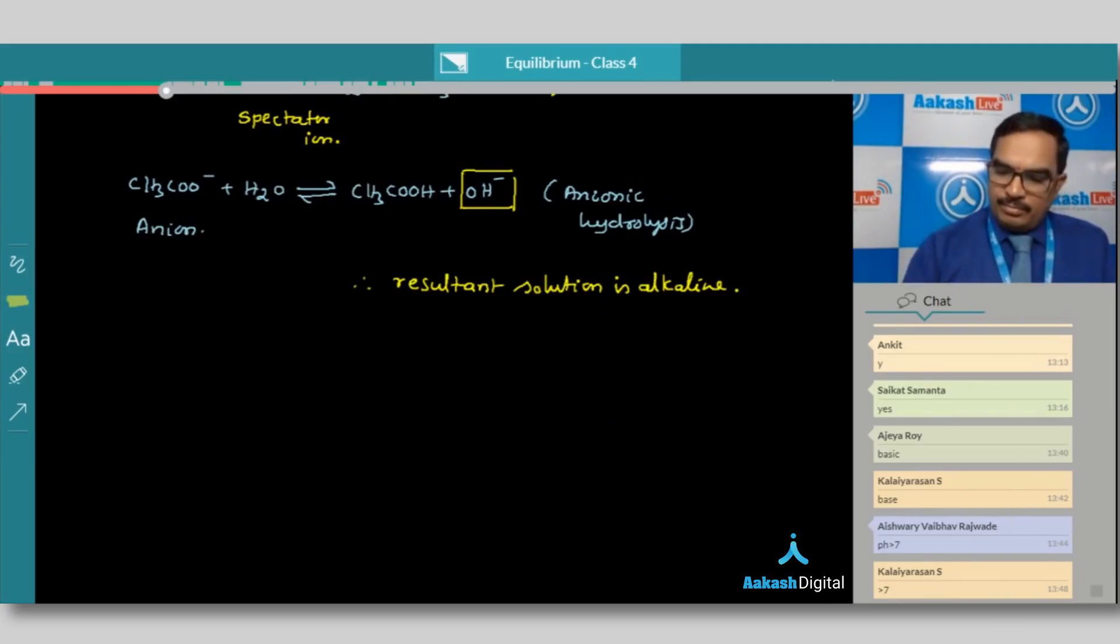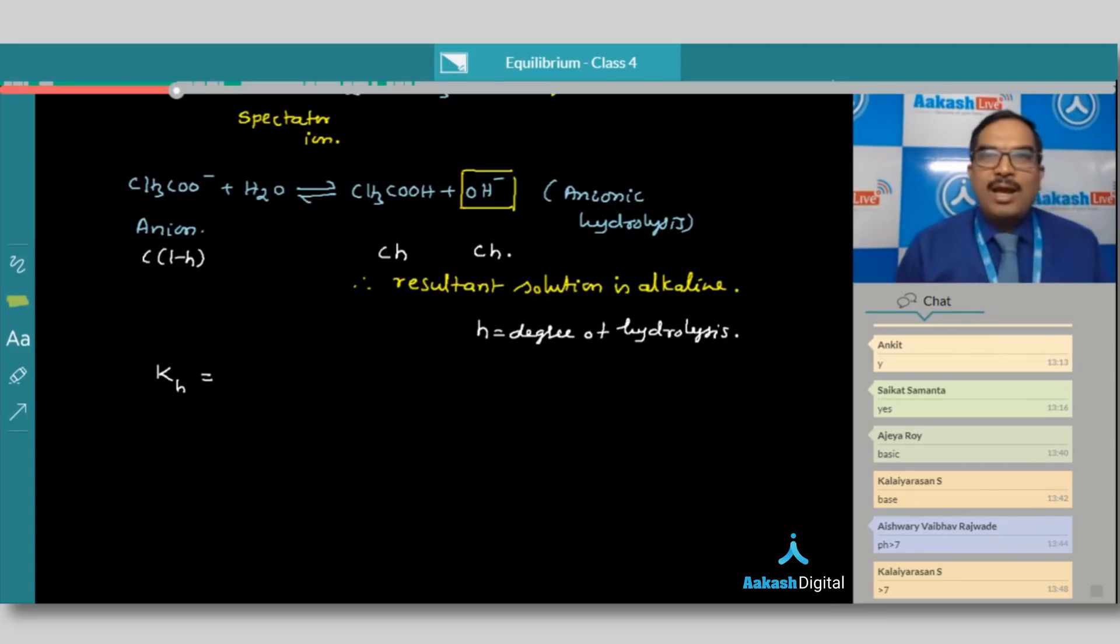In such a case, if I write down the degree of hydrolysis, then we take degree of dissociation as alpha, but it is hydrolysis reaction. So I am taking this as small h. The same, I can write it as C into 1 minus h after the reaction. This will be Ch. This also will be Ch. Where C is the concentration, h is the degree of hydrolysis. So what is h here? Degree of hydrolysis. Is it clear? Suppose if I write equilibrium constant, what we call it as Kh. Kh is called as hydrolysis constant.